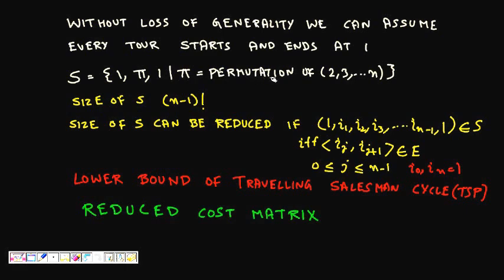A tour can be represented as node 1, then π (a permutation of nodes 2 through n), and back to 1. For n−1 nodes from 2 to n, there are (n−1)! permutations. A permutation is valid only if each consecutive pair (iⱼ, iⱼ₊₁) belongs to an edge in the graph — only then do you have a valid tour.